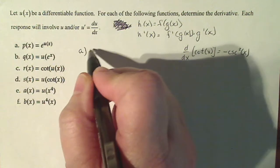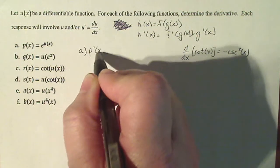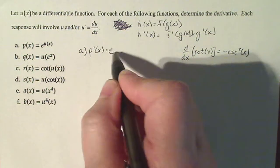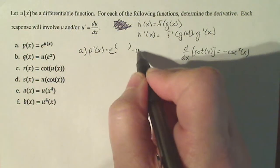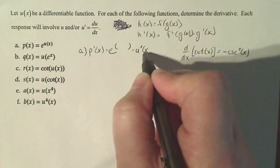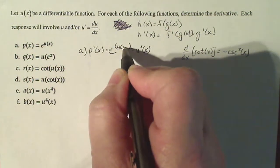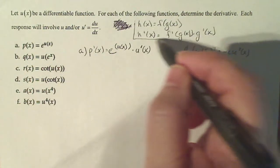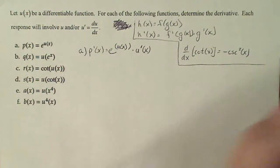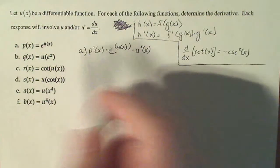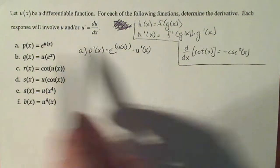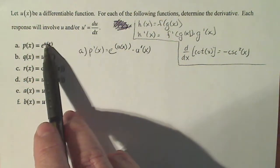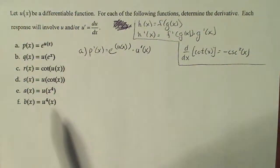When I look at part a, I say p prime of x, the derivative of the outside times the derivative of the inside with the original inside. So I'm going to go a little faster here. So derivative of the outside, e to the x times the derivative of the inside, u prime, and I have to put the original interior into the derivative of the outside.